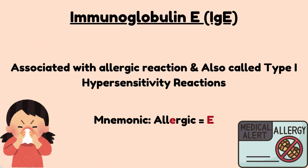Next is immunoglobulin E. It is associated with allergic reactions, also called type 1 hypersensitivity reactions. To remember it, note that the fourth letter of the word 'allergic' is E, and E refers to immunoglobulin E. So it is associated with any allergy you have, and immunoglobulin E will be produced in such cases.